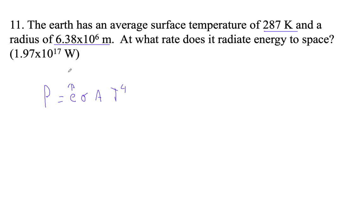Sigma, area, temperature to the fourth. So typically, if you don't tell an emissivity, just use one - we'll assume that it's like this perfect black body. And then it's going to be a sphere, so it's going to be 4 pi r squared.